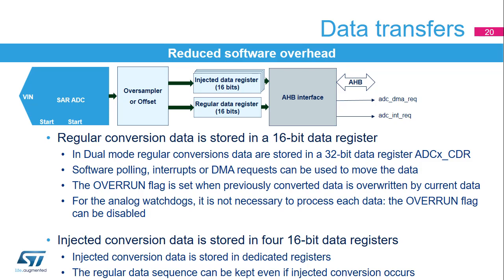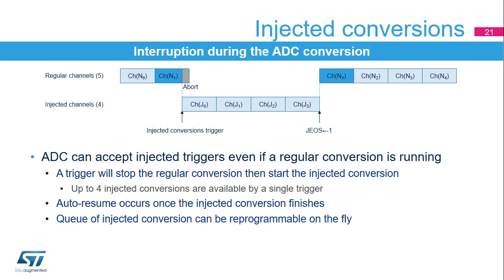An overrun flag can be generated if data is not read before the next conversion data is ready. In case of overrun, either the new sample is dropped or the previous sample is overwritten. For injected channel conversions, four dedicated data registers are available. An injected conversion is used to interrupt the regular conversion, then insert up to four channel conversions. Once an injected conversion is finished, the regular conversion sequence can be resumed. The injected conversion result is stored in dedicated data registers. Flags and interrupts are available for the end of conversion or end of sequence. The choices for an injected channel can be reprogrammed on the fly — even if a regular or injected conversion is in progress, you can add a different channel to the queue so that the next injected channel can be different from the previous one.